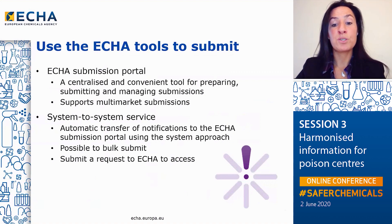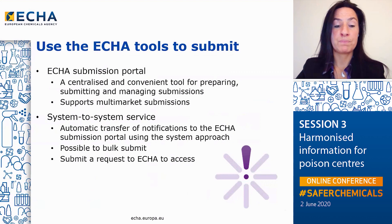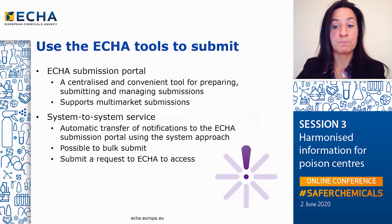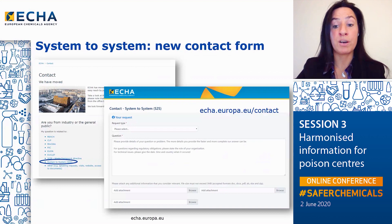The second way to submit Poison Centers notifications is using the System-to-System service. The System-to-System service is an automatic transfer allowing companies that have created Poison Centers dossiers in their own systems to submit their notifications to the ECHA submission portal. In this way, companies can submit a high number of dossiers all at once, and dossiers are then available to all the relevant member states. The access to the System-to-System service needs to be requested from the agency via the ECHA contact form. Be informed that a new contact form has recently been created specifically for System-to-System related inquiries, available on the ECHA website.